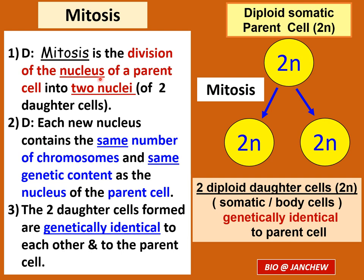Mitosis and cytokinesis are separate events. Division of the nucleus is mitosis, and division of the cytoplasm is cytokinesis. Each new nucleus produced through mitosis contains the same number of chromosomes and the same genetic content as the nucleus of the parent cell — like a photocopy. Daughter cells produced are 100% like the parent cells genetically; the two daughter cells formed are genetically identical to each other and to the parent cell.